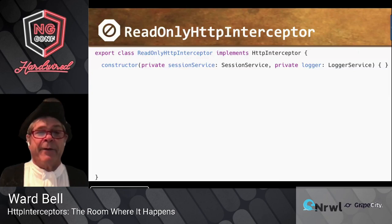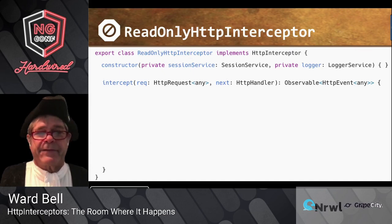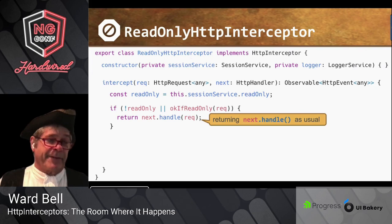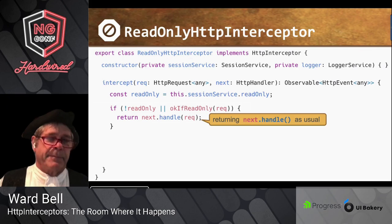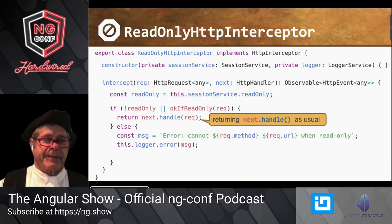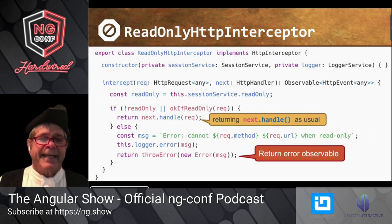We write it again — starts as a class. This time we're injecting a session service so we can know the read-only state, and we have a logger. Here's the shell of the intercept method: request, next, returns an observable. I pick up the read-only state from the session service. If it's not read-only, or if it's one of those requests okay to send, I handle it in the usual way. Otherwise, I compose an error and log it, and instead of throwing an error, I return an error observable.